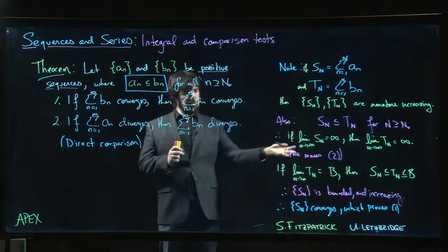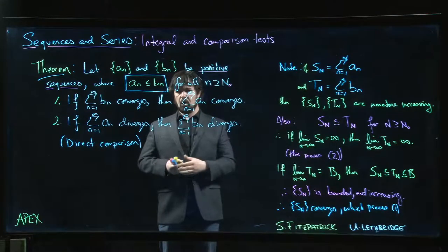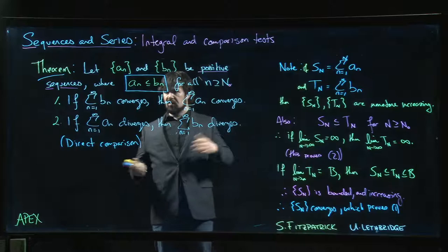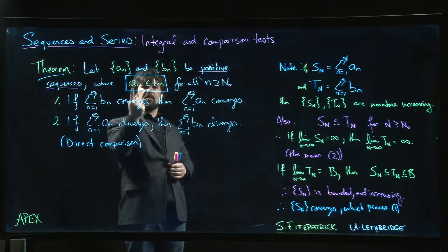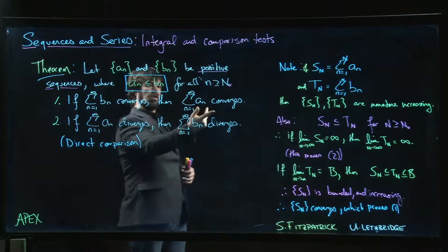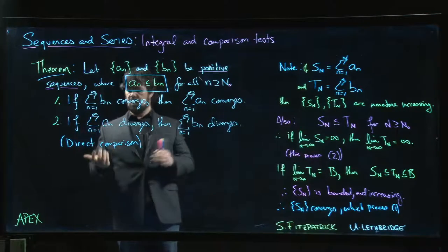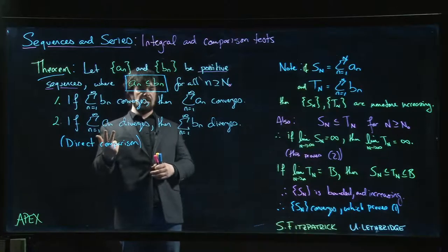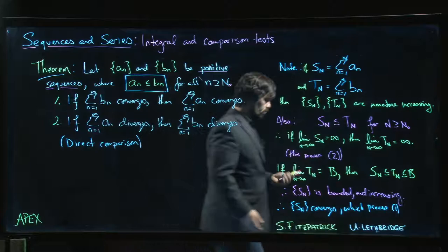In case you're wondering why it's true, there's the argument. So direct comparison is pretty straightforward. It makes intuitive sense. If these numbers are always bigger than those numbers, if this converges, well this should converge to something smaller. Makes sense. Similarly, if this diverges, well this should be bigger than that so it should diverge as well.